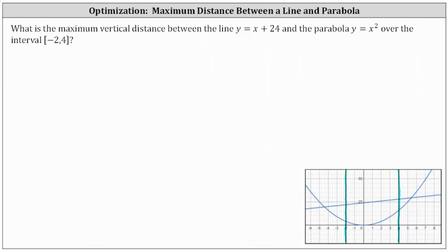What is the maximum vertical distance between the line y equals x plus 24 and the parabola y equals x squared over the closed interval from negative 2 to positive 4? We're only concerned about this closed interval from x equals negative 2 to x equals positive 4.